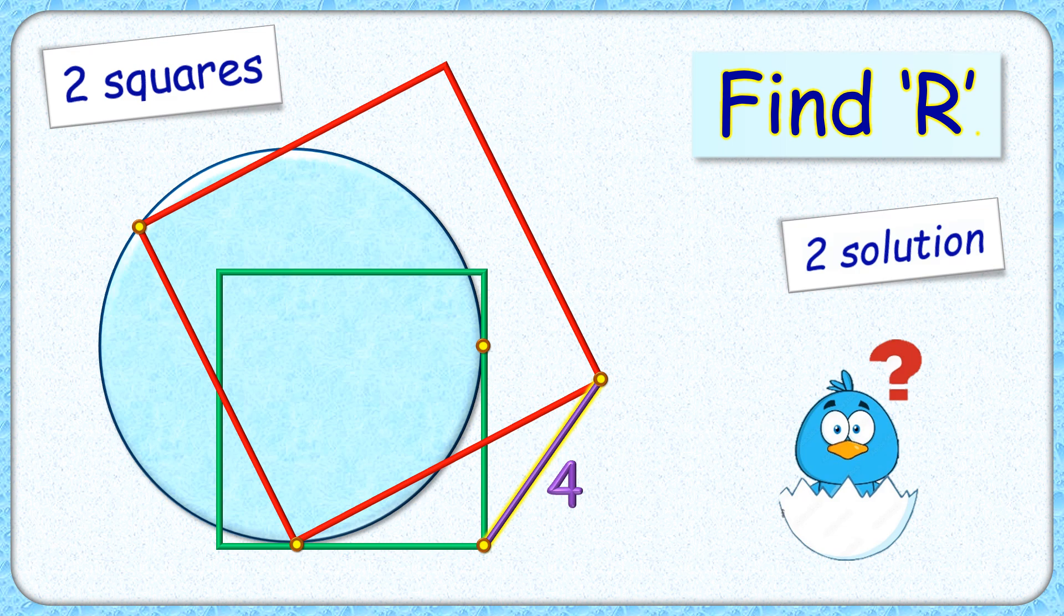Welcome everyone to this interesting question where given are a circle and two squares. This green square has two of its sides tangential to the given circle, and this red square has two vertices lying on the circumference of the circle, where one vertex is lying at the point of tangent.